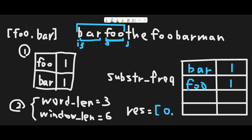Next, i becomes index 1. Copy i to j, so j is index 1. We search from index 1 to 7 (range of 6). We cut the first three characters — a, r, f — but there is no 'arf' in the hash map. So immediately break; we can't find fu-bar or bar-fu. Then i moves to index 2, j is also index 2. We search this range. Try to cut the first three characters: r, f, o — but there is no 'rfo', so immediately break.